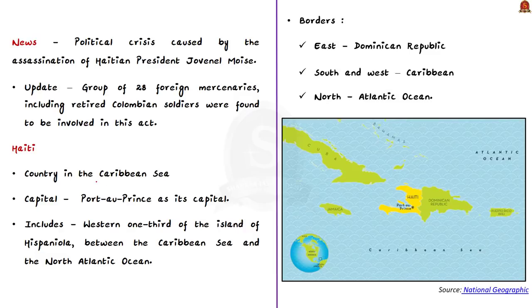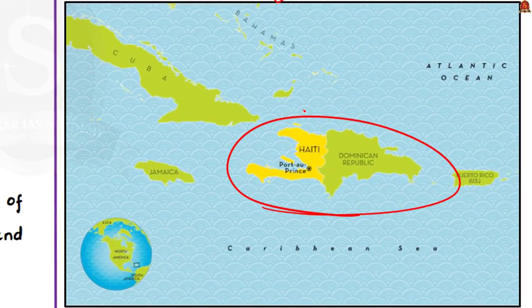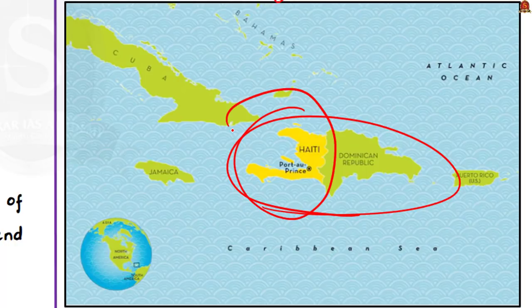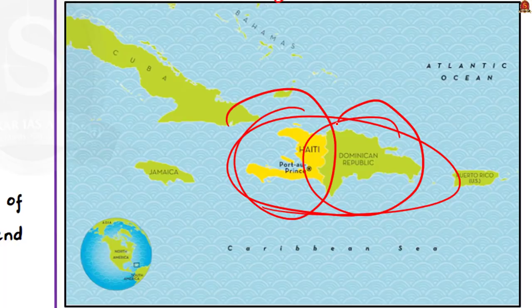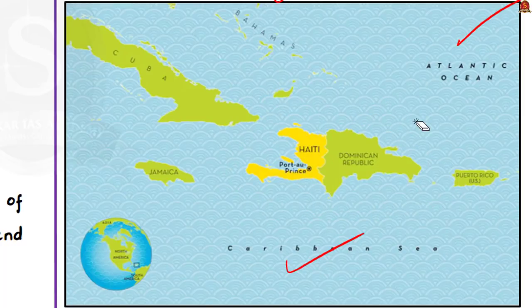Looking at the map, Haiti lies in the western part of the island of Hispaniola, occupying almost one third of the island. The eastern part is the Dominican Republic. The island lies between the Caribbean Sea in the south and the North Atlantic Ocean in the north. Haiti is bordered by the Caribbean Sea in the south, the North Atlantic Ocean in the north, and the Dominican Republic in the east.